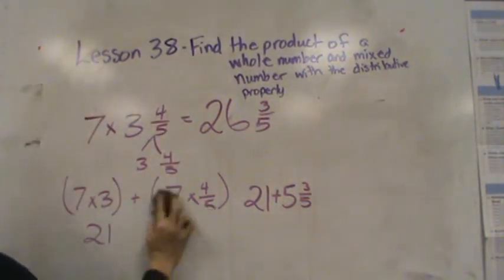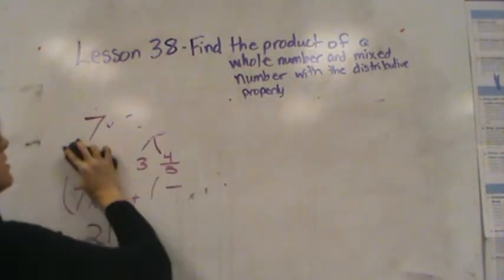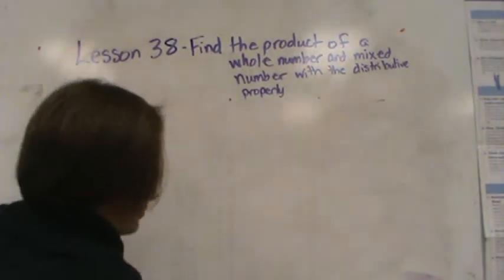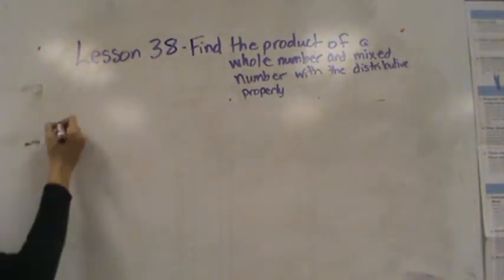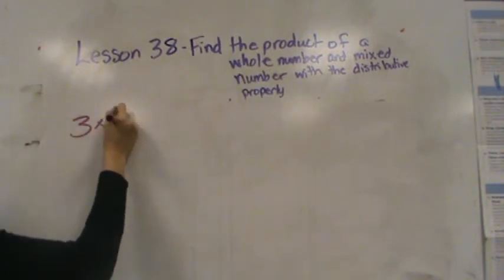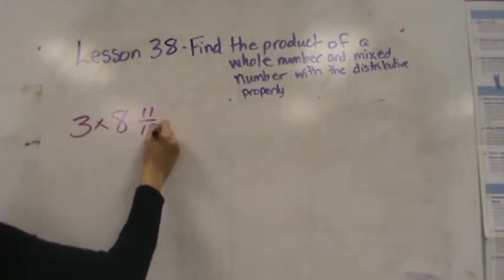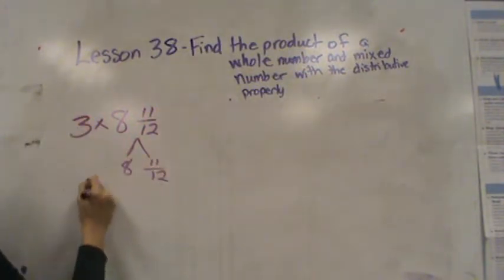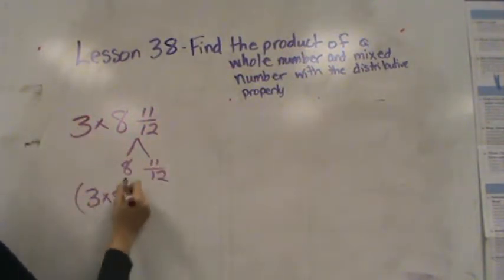All right, let's do another one. 3 times 8 and 11 twelfths. Remember break up the whole and the fraction, multiply 3 times both of those.